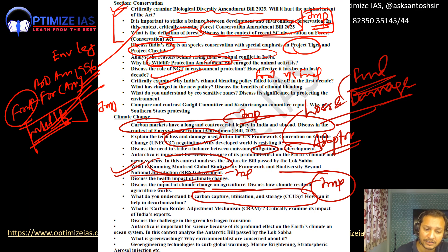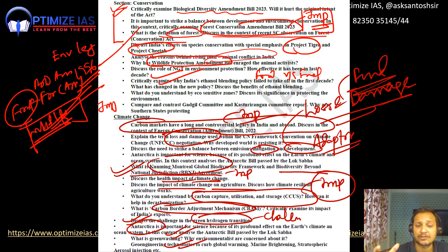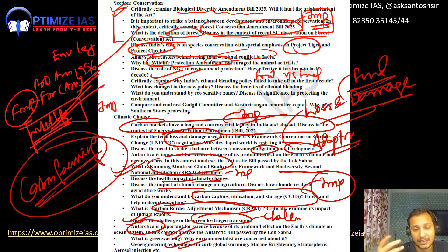The Carbon Border Adjustment Mechanism and its impact on the Indian economy is worth covering. Green hydrogen transition — what are the challenges? — is also a probable question. Questions can also come on Antarctica, geoengineering, and greenwashing, though these are less probable. The high-probability questions are: carbon markets, the mitigation versus adaptation debate, the loss and damage debate, and carbon farming. The overall concept of carbon capture, carbon storage, and carbon farming is an evolving and very important theme.